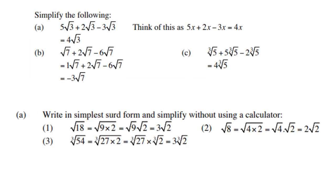Next example: 5 times square root of 3 plus 2 times square root of 3 minus 3 times square root of 3. These work like like terms — just like 5x plus 2x minus 3x. You can add or subtract like surds, so 5 plus 2 is 7, minus 3 is 4 times square root of 3. Check this on the calculator to make sure.